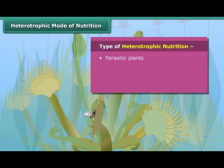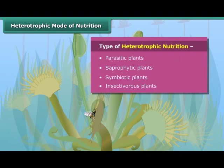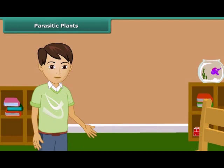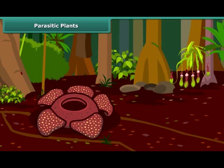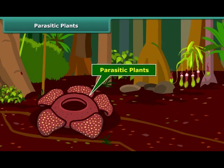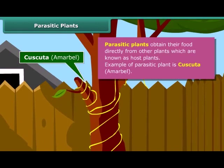The four types are: parasitic plants, saprophytic plants, symbiotic plants, and insectivorous plants. Parasitic plants obtain their food directly from other plants, and those plants from which they obtain food are known as the host. Kaskata or Amarbel is an example of a parasitic plant. It coils around the stem and branches as a yellow tubular structure. It does not contain chlorophyll, so it takes ready-made food from the plant on which it is climbing, which is called the host.